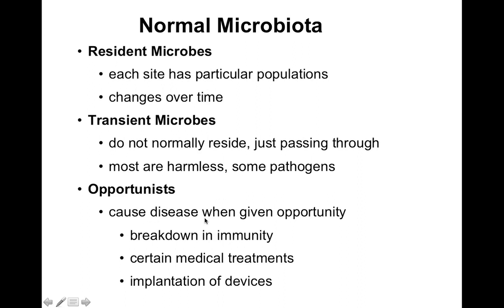Then we have opportunistic pathogens. All pathogens are opportunists and all opportunists are pathogens. They cause disease when given the opportunity — a breakdown in immunity, certain medical treatments, or implantation of devices. These are the ones that like to set up shop when your immune system is weakened. A lot of molds and fungi fit into this category; they're ubiquitously found in the environment. If you have a healthy immune system you're fine, but until something goes wrong with your immune system, they can take over.